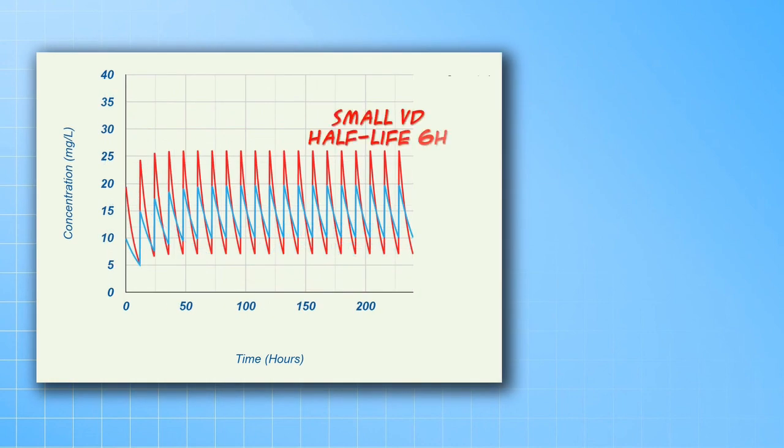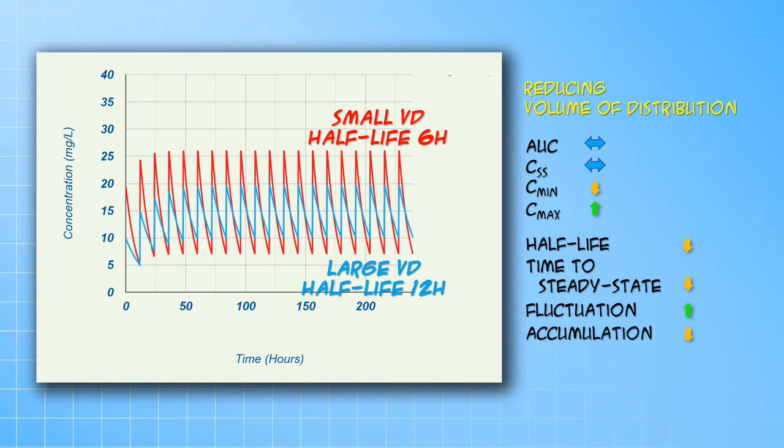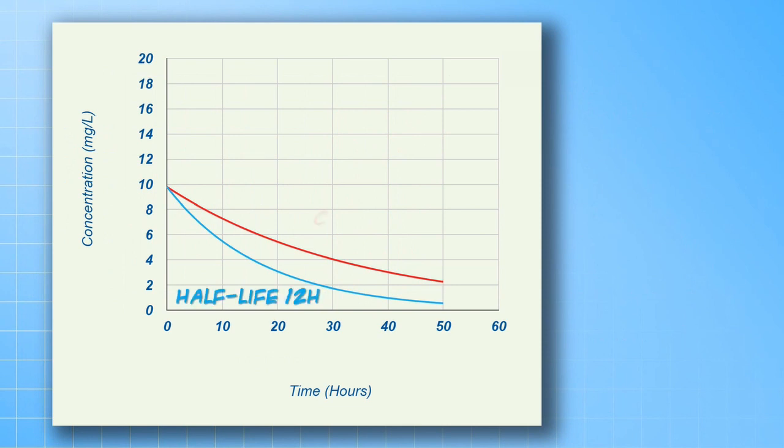You can see the same effects in the multiple dose situation. Here, when you reduce the volume of distribution, the area under the curve and steady state concentrations are unchanged, but the maximum is higher, whereas the minimum concentration is lower. Consequently, the fluctuations are increased. Reducing the volume also reduces the half-life and shortens the time to reach steady state.